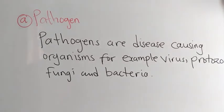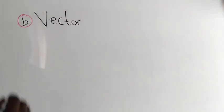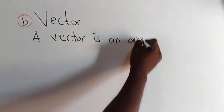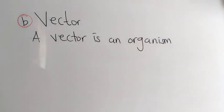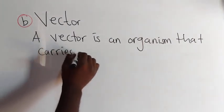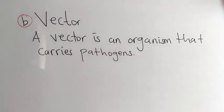So let us now look at question B. They want us to explain what a vector is. A vector is an organism that carries a pathogen. Or a vector is an organism that carries parasites. The purpose of the vector is just to carry a pathogen, and then the pathogen causes a disease. That is the difference between a vector and a pathogen.